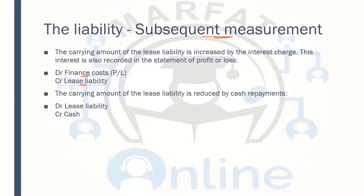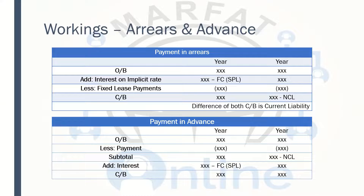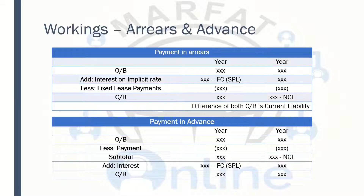When you are making the payments, the lease liability will be reduced. Now you can see the formula. For payment in arrears, you're making the payments at the end of the year. You take the opening balance, which is the present value of lease payments. The liability balance is increased by the interest — you apply the interest rate on the opening balance. Then you deduct the fixed lease payments, and you get the closing balance. This closing balance becomes the opening balance of the next year.